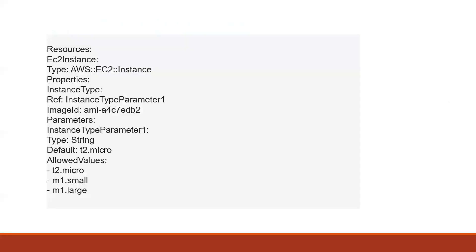You can check my previous video in which we were creating an EC2 instance. Here, under resources, we are creating an EC2 instance, and you can see we are defining an instance type parameter — it should be a string, default is T2 micro, and the allowed values are T2 micro, M1 small, or M1 large. This is how we define a parameter: instance type parameter is the name, it's a string, and default is T2 micro.